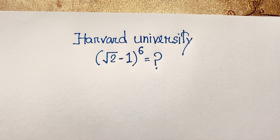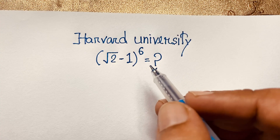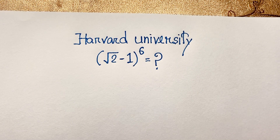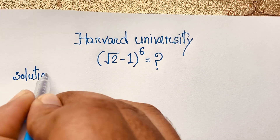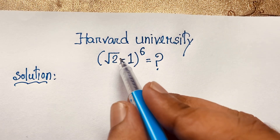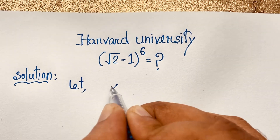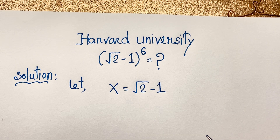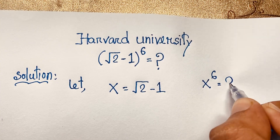Hello everyone, welcome to Russell's Classroom. Today we have an interesting math olympiad question: what is (√2 - 1) whole to the power 6? To solve this, first we let x = √2 - 1, and our target is to find x to the power 6.